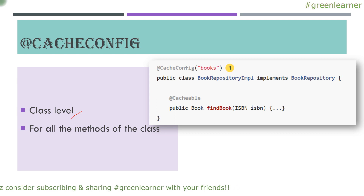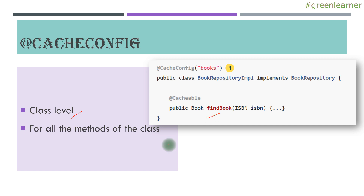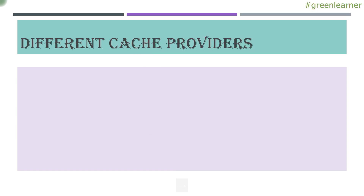The next annotation is @CacheConfig, which works at the class level. When you have a class with 4 or 5 methods and you want the same caching policy on all methods, instead of specifying the same information repetitively on each individual method with @Cacheable, you can use @CacheConfig to specify that information at the class level and it will be applied to all the methods.